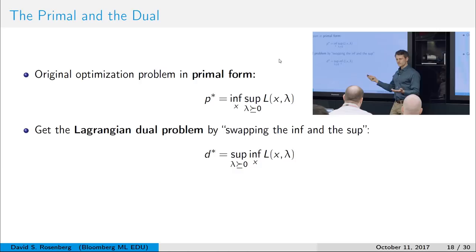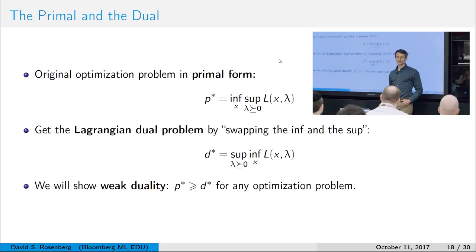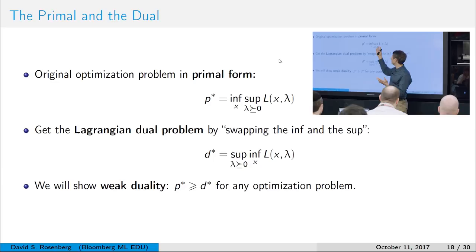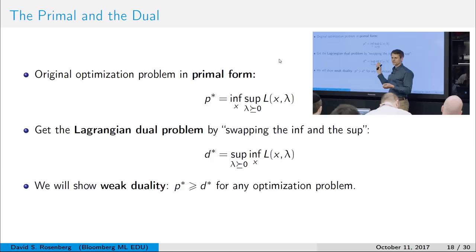We don't always have strong duality, but we always have what's called weak duality: p-star is always at least as large as d-star. The way I remember this is — it's what you do first that counts more. If you're doing the supremum first, you end up with things that are the biggest of their group, then you're minimizing — so you end up with something larger than if you did the infimum first. So look to the inside first — that's how I remember the order for weak duality.